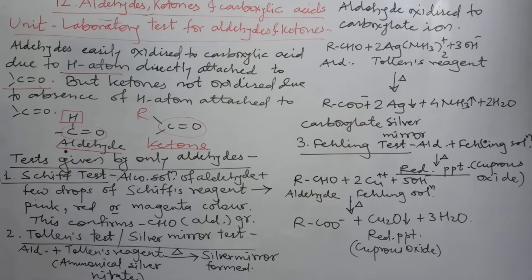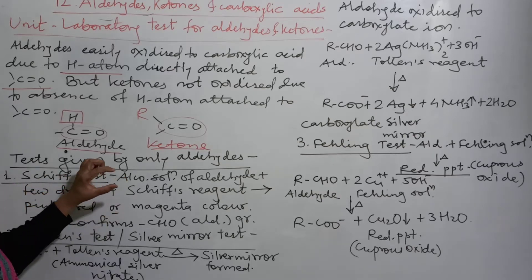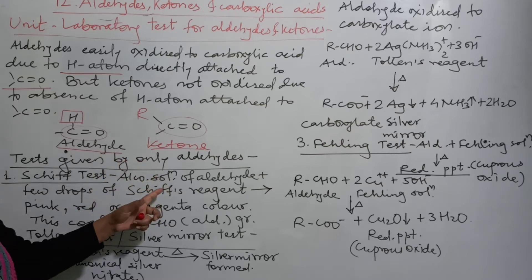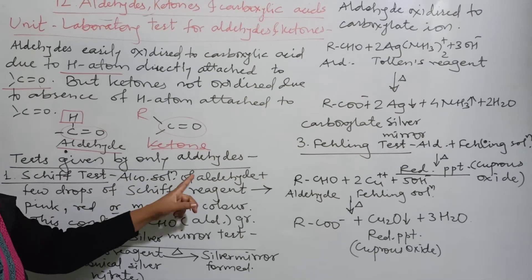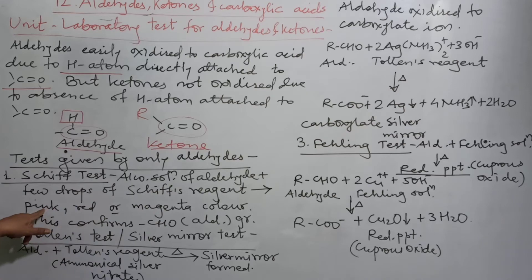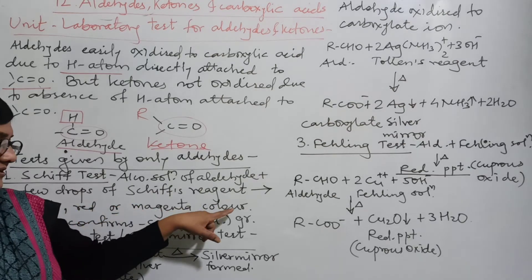The first test is Schiff's reagent or Schiff's test. Here in simple equation form, description is given. You can write in sentence form or you can write in this manner. So alcoholic solution of aldehyde plus few drops of Schiff's reagent. What is the color? Pink, red, or magenta color is observed.